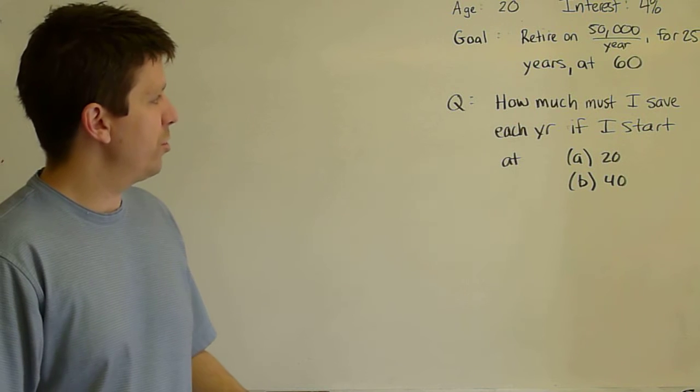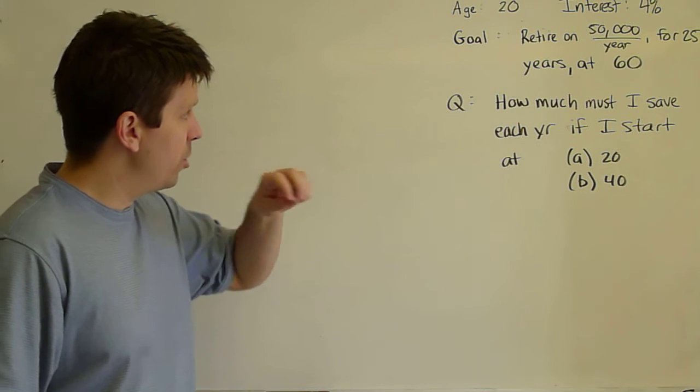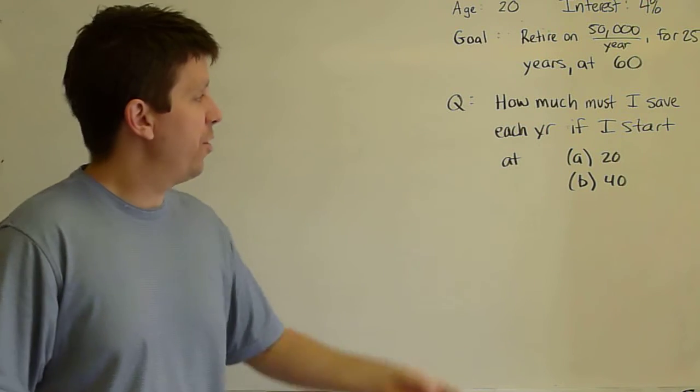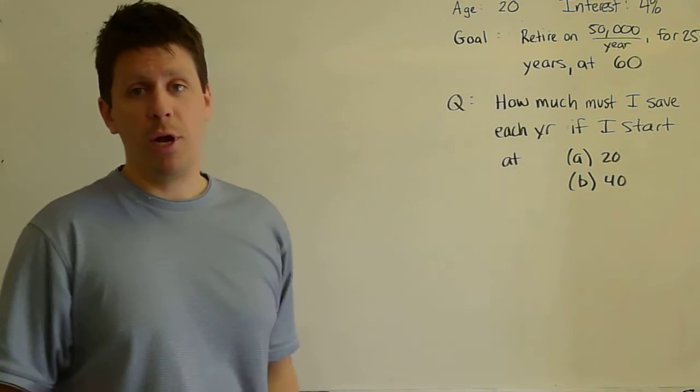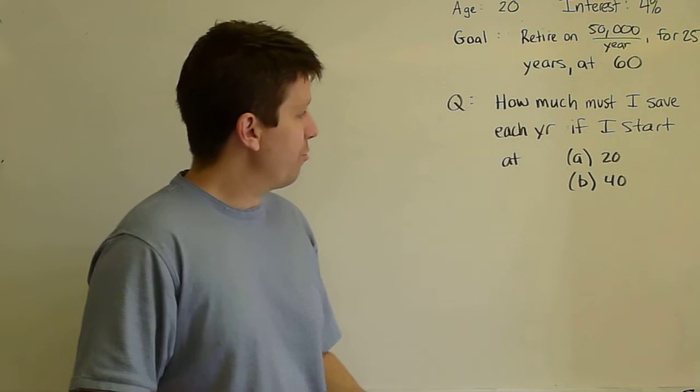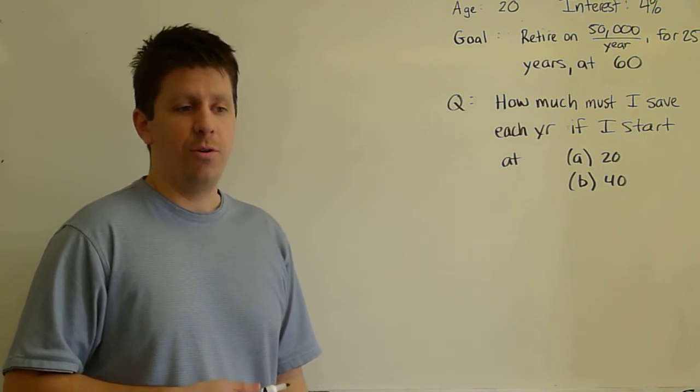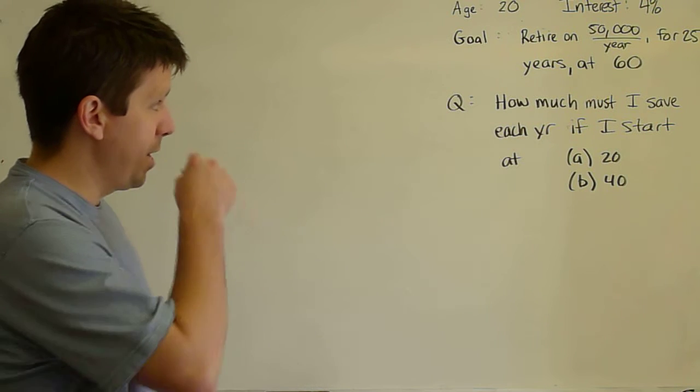So what we have here is a multi-part question. There is one phase at the beginning where you're saving money and another phase at the end where you are withdrawing money. And the same differential equation will apply to both cases, but you have a different withdrawal rate or savings rate depending on which phase you're in.